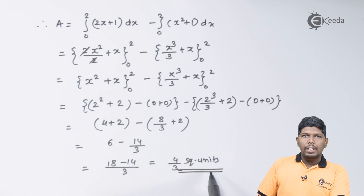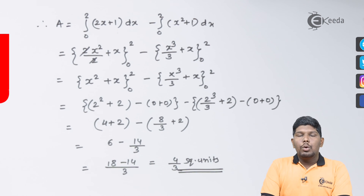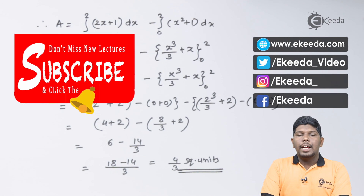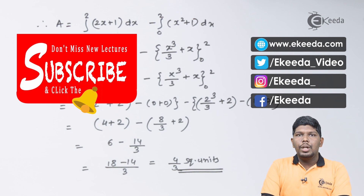This is our final answer: 4/3 square units. I hope friends you have understood this problem. Thank you for watching this video. Stay tuned with Ikida and subscribe to Ikida.